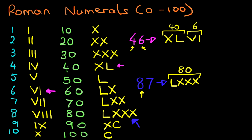Now how do we write down 7? Can you see 7 anywhere? 7 is over here — you should know this by now. That is VII: V, that's 5, 6, 7. So therefore, 87 is LXXXVII. It looks complicated, but it is very, very simple. So that is Roman numerals from 0 to 100.